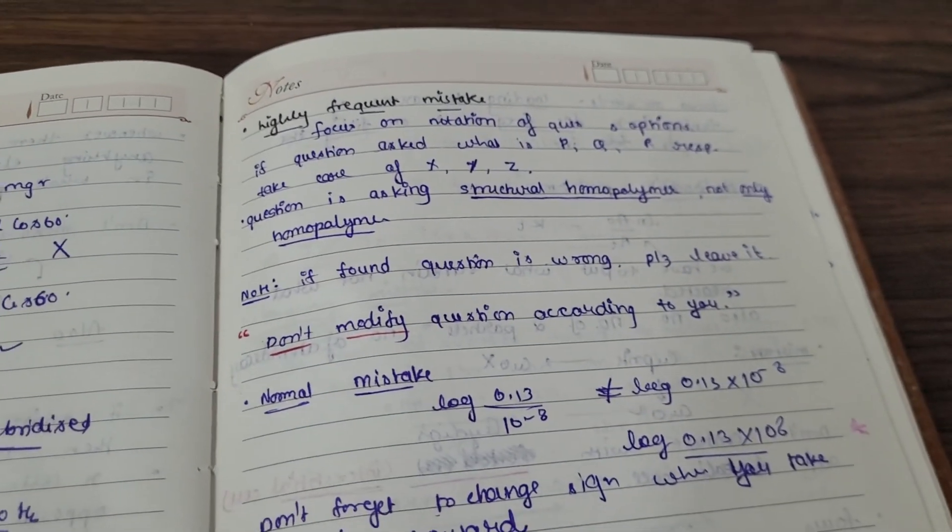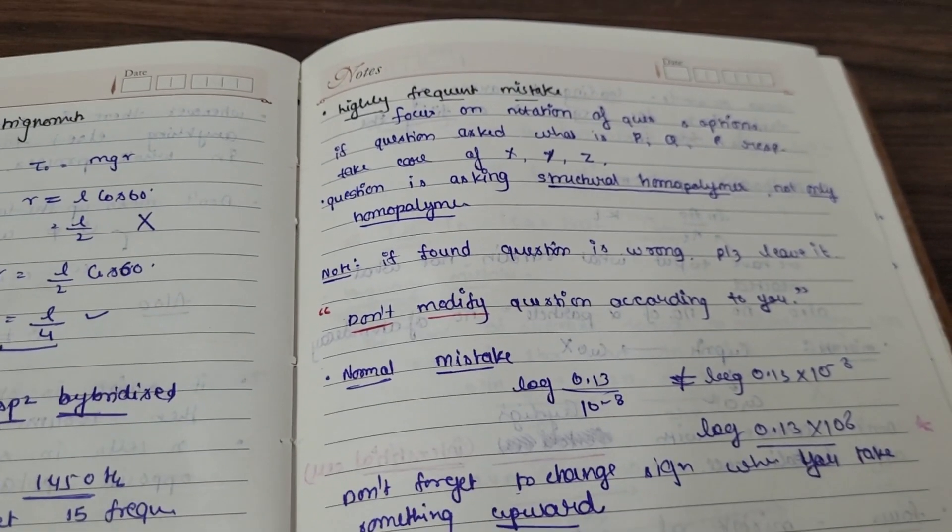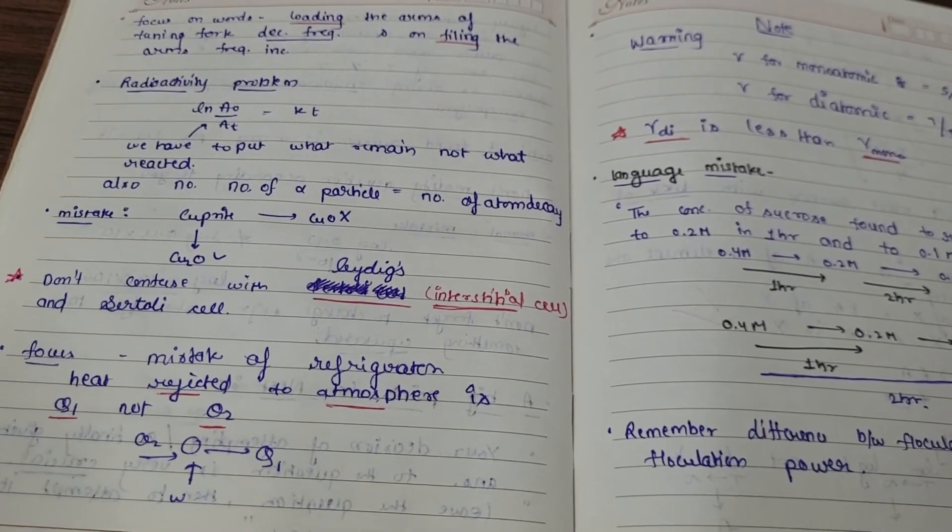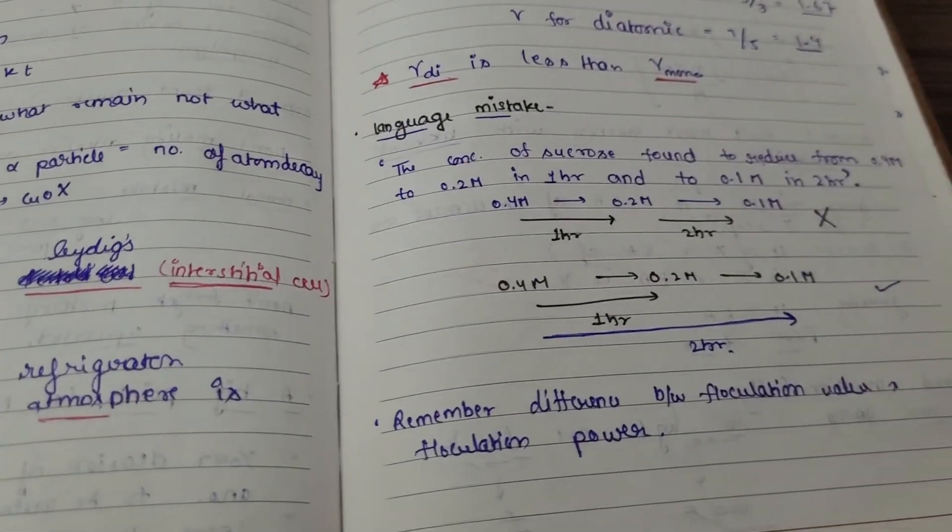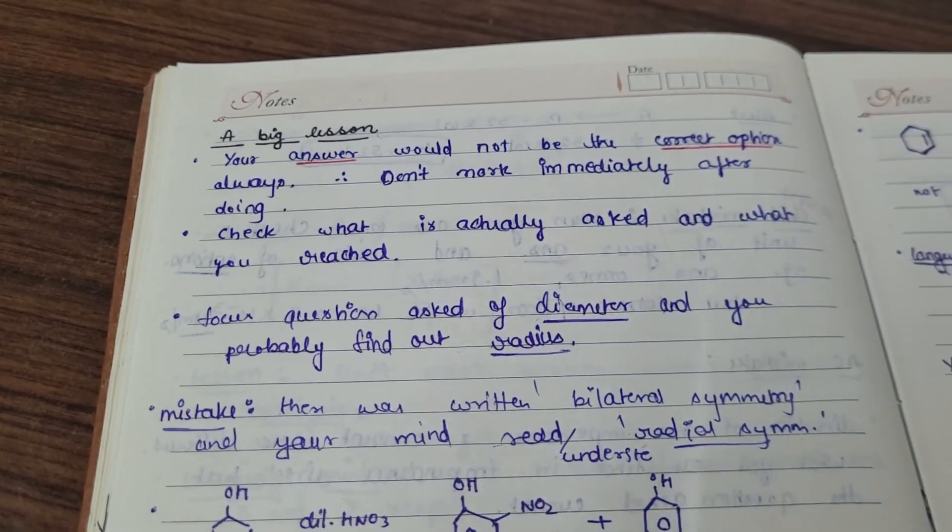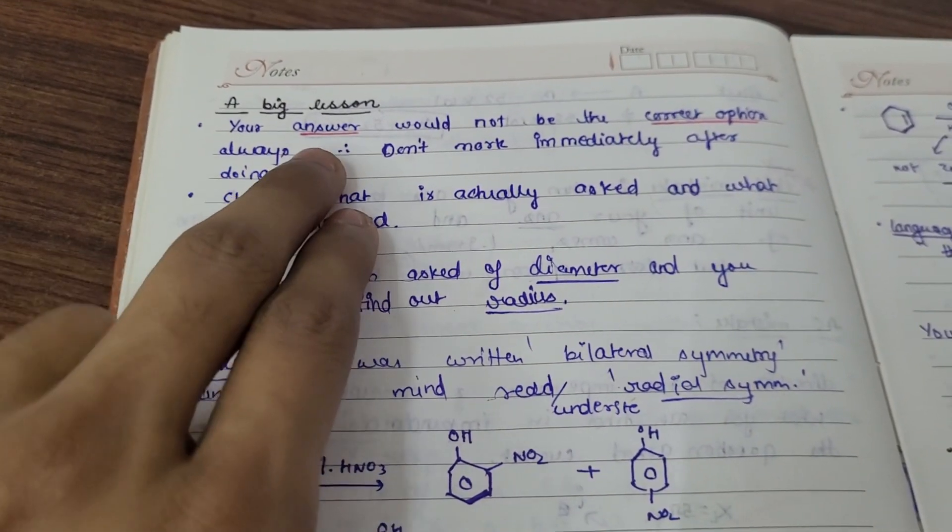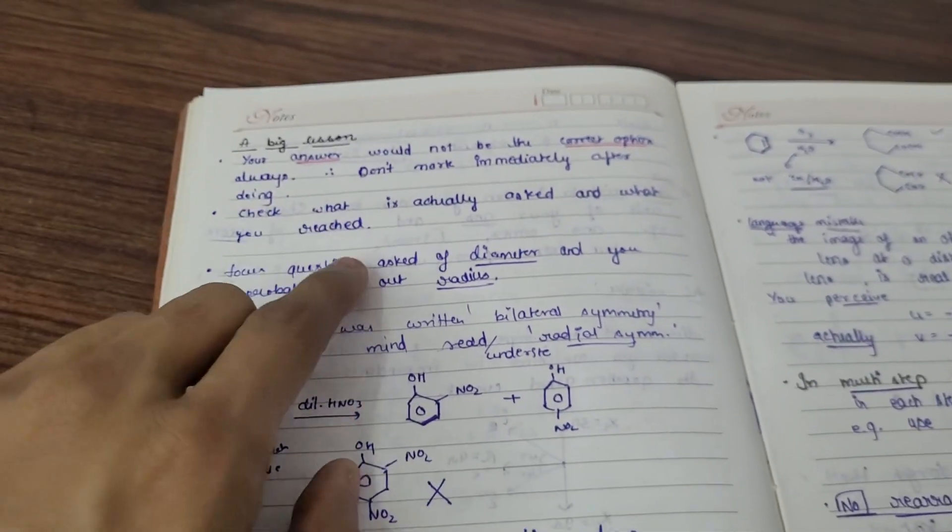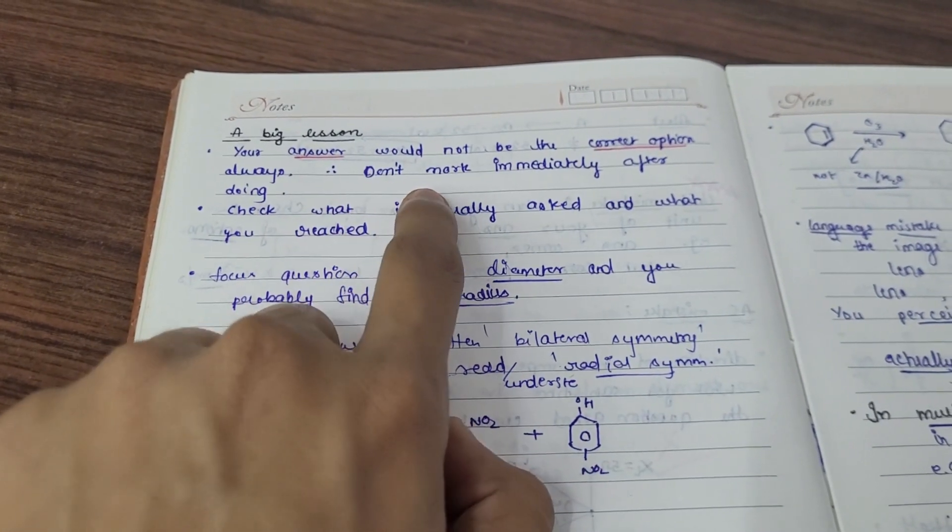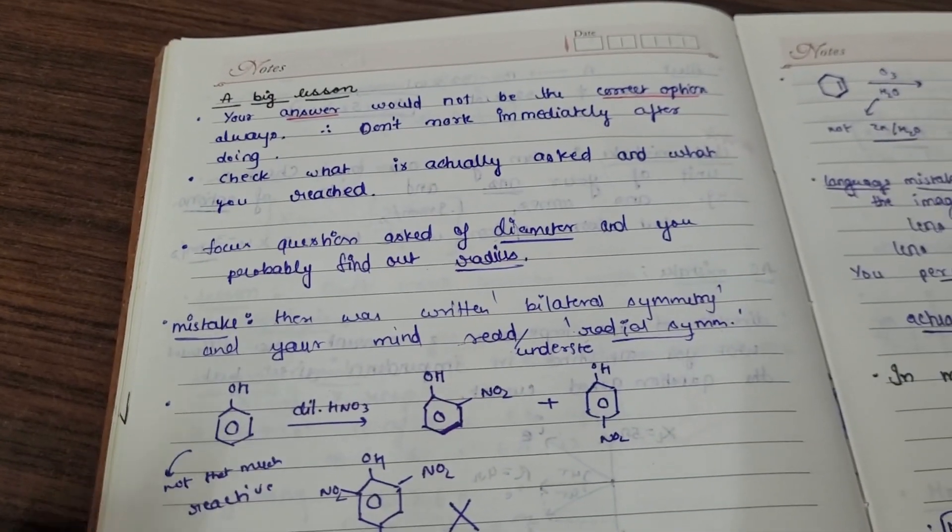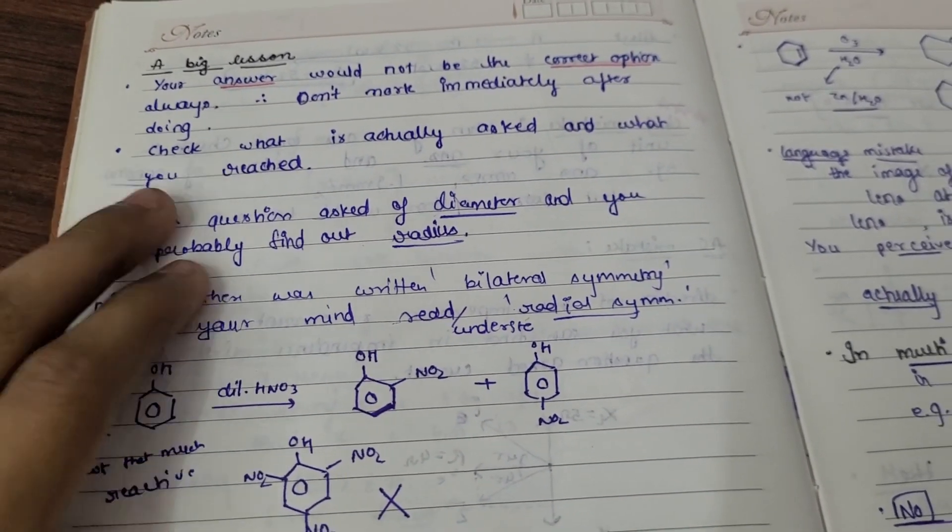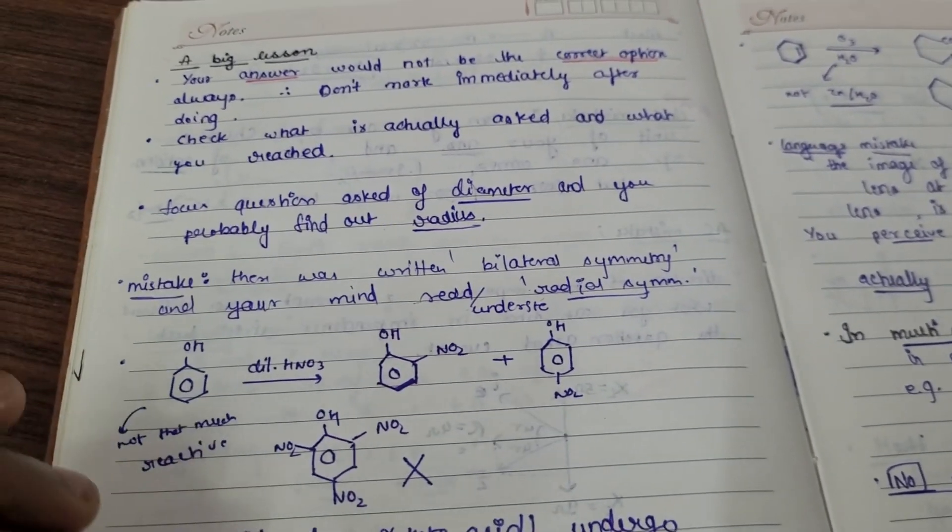And what is written in the options, so you have to focus on what is actually asked and what is written in the options. You have to read questions two times so that you have a better idea. This is a very interesting thing which you have to focus on - you have to check what is written in the options and what is asked. Don't mark immediately, you have to read the question and check what is asked. Thank you so much guys.